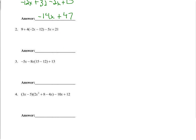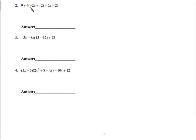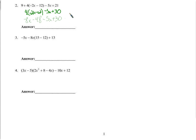Number two — and again, on the B version of the quiz, you might have to find it at another number. We have a 9 and a 21 — I'm going to add the 9 and the 21 and get 30. 9 plus 30 gives us minus 5x, and there's 4 times negative 2x minus 12. Nothing to do but distribute. We get negative 8x minus 48 minus 5x plus 30. Combining like terms: negative 8x minus 5x is negative 13x, and negative 48 plus 30 is negative 18.